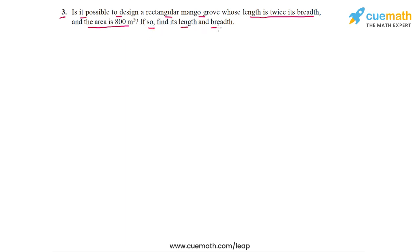And if so, find its length and breadth. So we have to figure out whether we can have a rectangular region whose length is twice its breadth and whose area is 800 meters square. So let's figure this out.